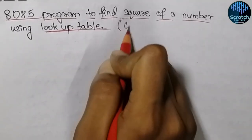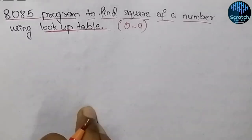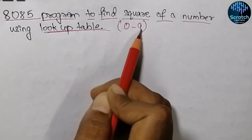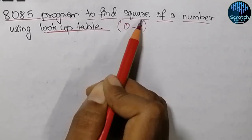We are doing this program to find the square of numbers from 0 to 9. If we input any value between 0 to 9, it will give you the square of that value.